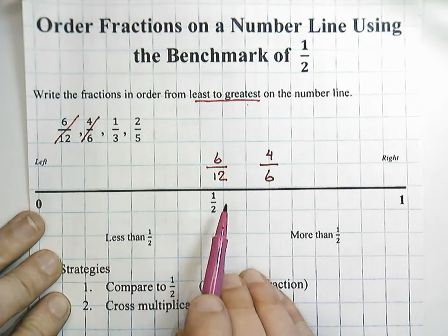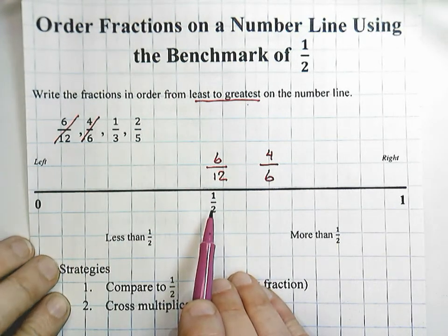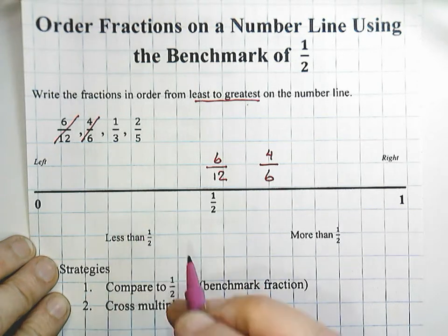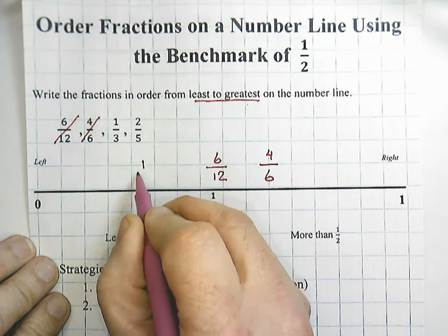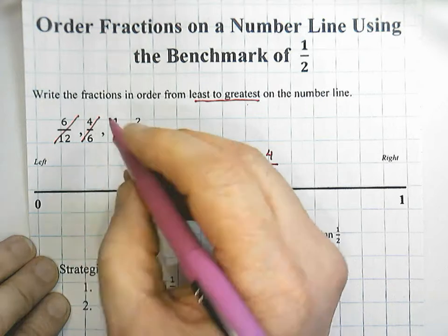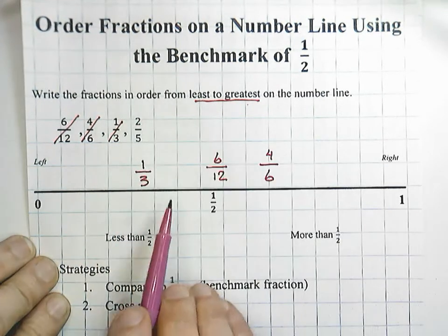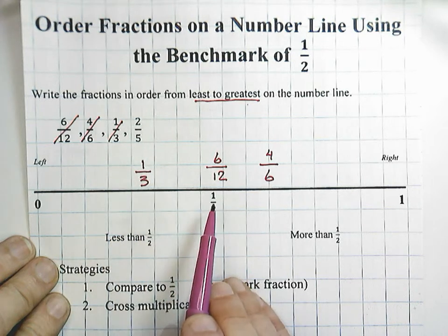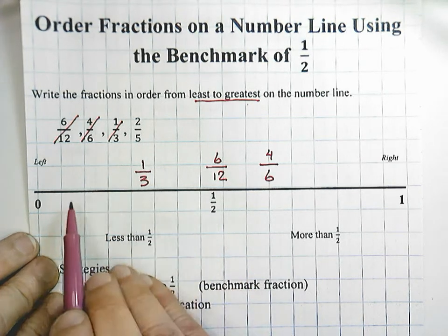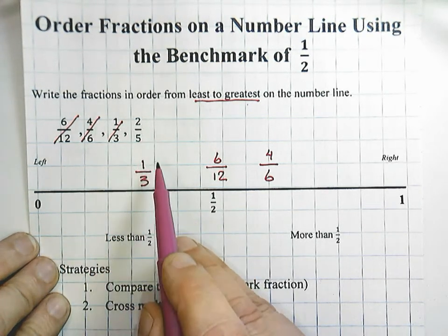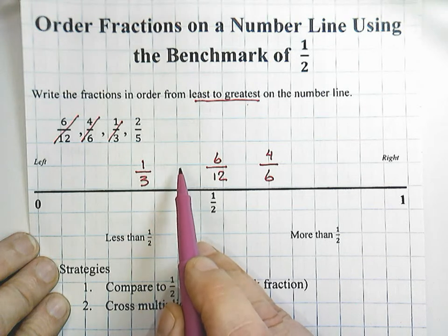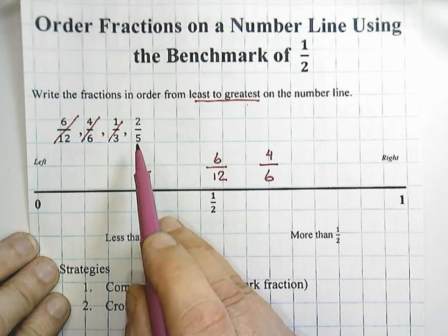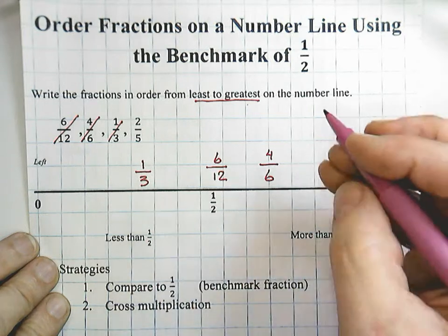One-third would be a fraction that is less than one-half, meaning it's going to go over on this side here. I'm going to place one-third here. And then two-fifths is also less than one-half, so it's going to go on this side. But I need to decide if it's going to go in between the one-third and six-twelfths or over here.